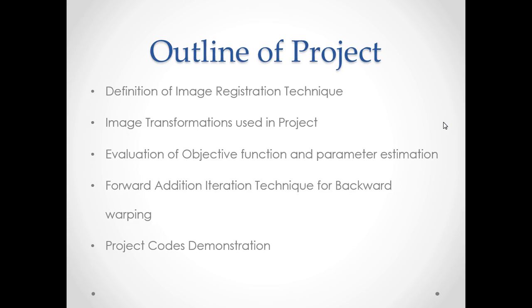The iteration technique we use for solving this non-linear function is called forward addition iteration, and it is basically used for backward warping. There are many iteration techniques that have been devised for solving the image alignment problem, but for our project we have implemented the code for image alignment using the forward addition iteration. Lastly, we'll go through the project code demonstration to see how the MATLAB code has been implemented.